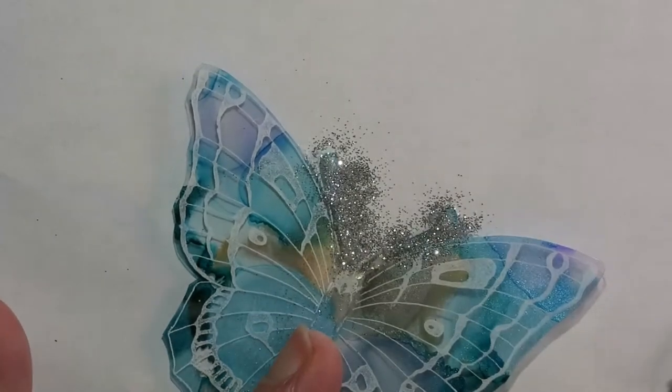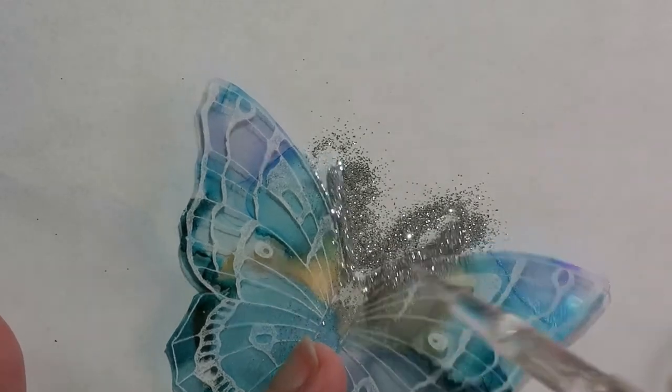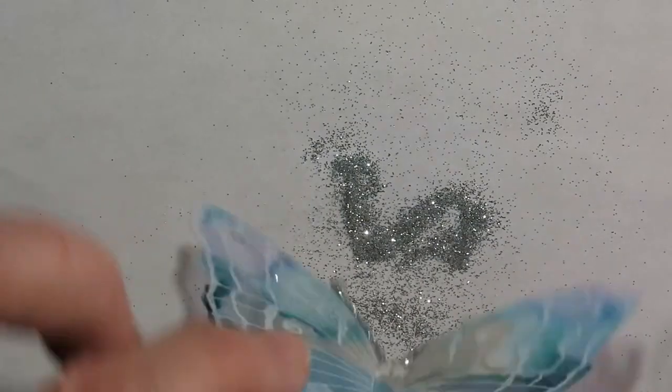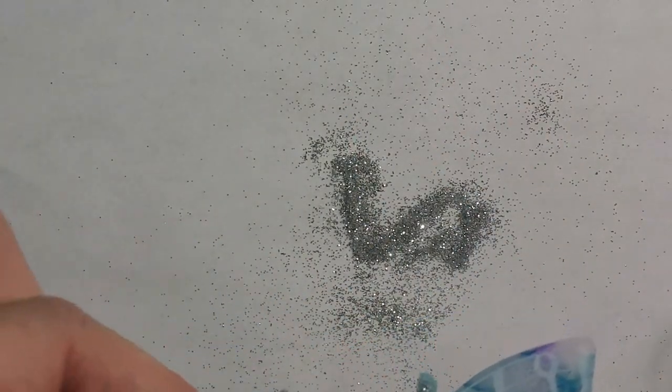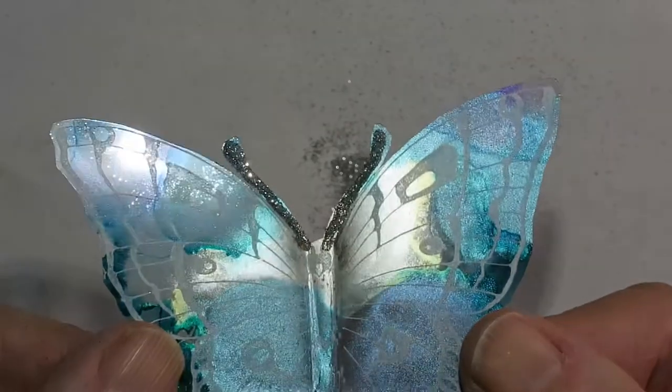I didn't use an antistatic powder or anything like that on this. I just find I have to really tap off that glitter quite well after I've applied it. Kind of like you would on vellum. Just a really firm tap to get it off. And then once it's dry, you can take the excess off.